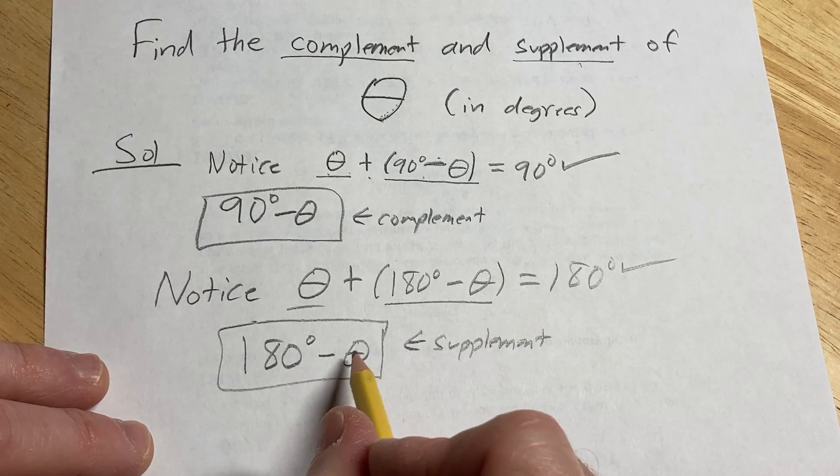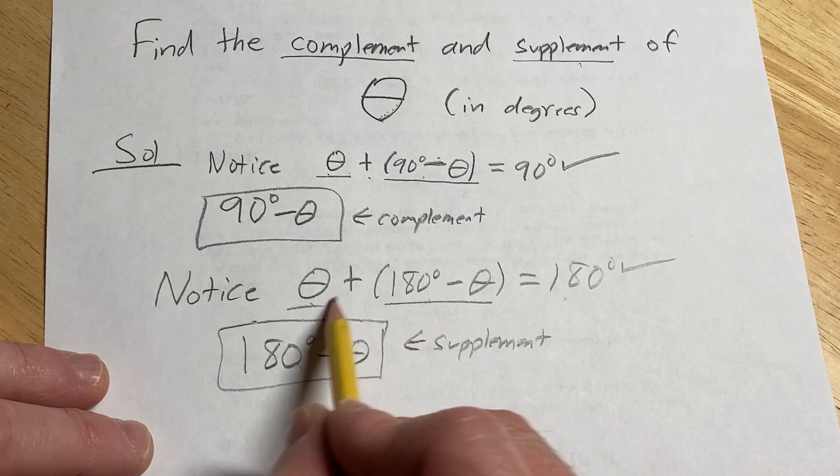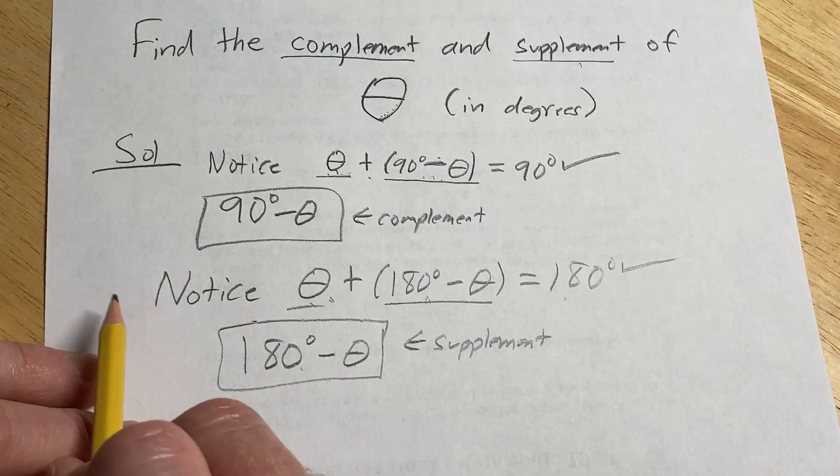That's because when you add this to theta, you get 180 degrees. So these angles are said to be supplementary, and these angles are said to be complementary.